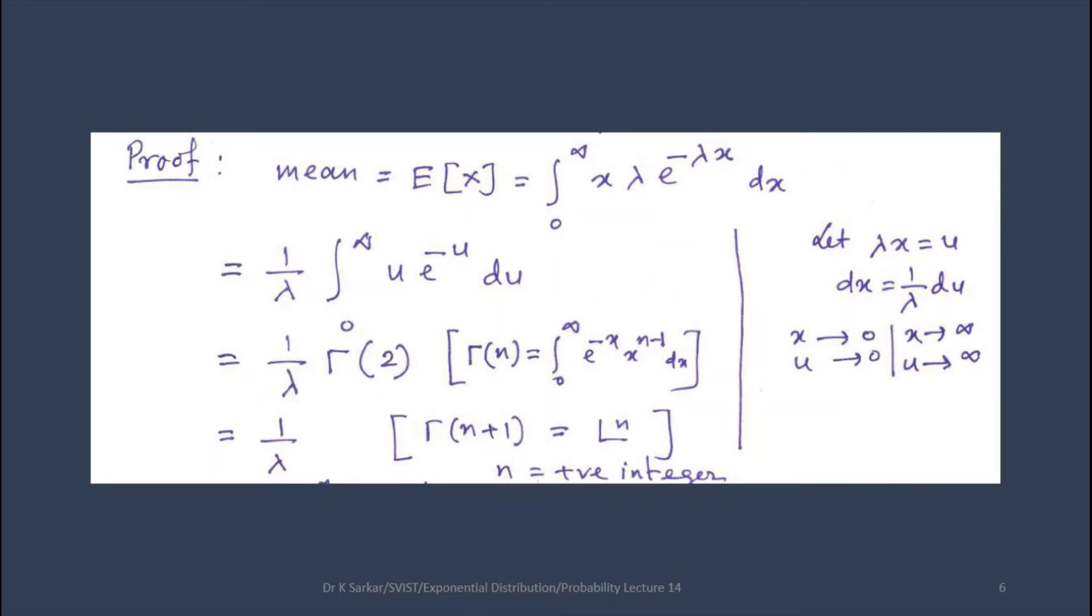Let us find it out. We know the mean formula for continuous random variable: E[X] equals integral 0 to infinity x f(x) dx, where f(x) equals lambda e power minus lambda x. Let us substitute lambda x as u, then dx equals 1 by lambda du.